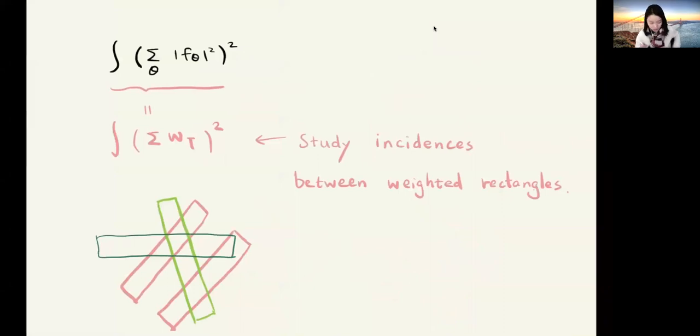So here is some idea. We are interested in estimating the square function, sum over theta f_theta square, and then take the square of the square function. Using some uncertainty principle, we might view this quantity, this square function integral, as sum over some weighted rectangles. W_t means a weight times the characteristic function of a rectangle. This quantity is roughly the L^2 integral of weighted sum of rectangles.